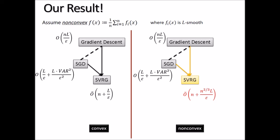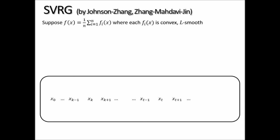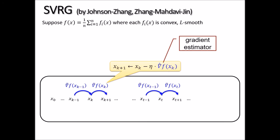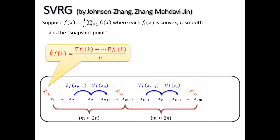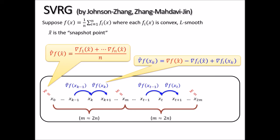Now let me dive into details. SVRG iteratively performs updates from x_k to x_{k+1} with learning rate times gradient estimator. It divides into epochs of length 2n, defines snapshot as first point of the epoch, computes full gradient exactly at the snapshot, and defines the gradient estimator in each follow-up iteration as a flash-to-compute quantity whose expectation equals the true gradient and whose variance approaches zero in the convex case.